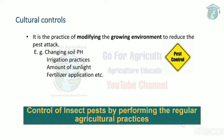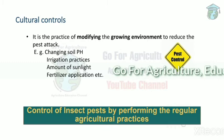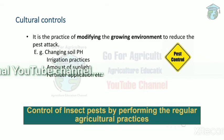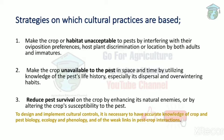In the growing environment with a crop and soil, there are many factors included in agricultural practices. This means we can control pest by modifying agricultural practices. So we can control the pest by modifying agricultural practices.